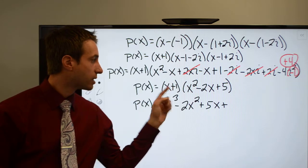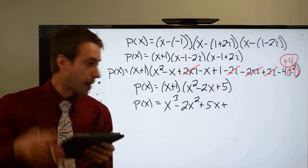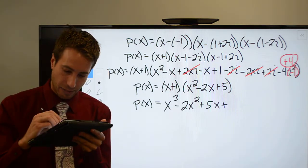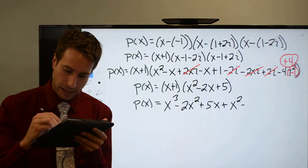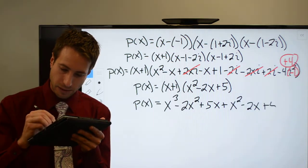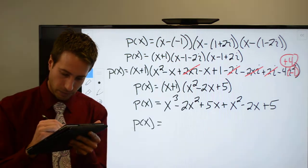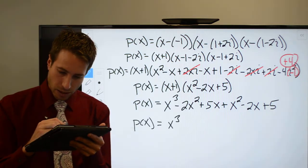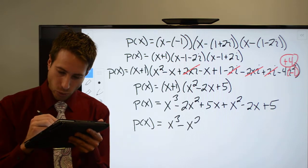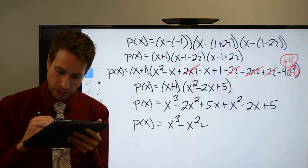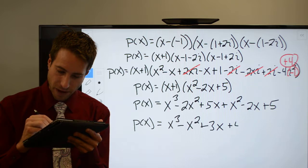Again, 1 times anything is itself. So I'm just going to rewrite this. I'll have plus x squared minus 2x plus 5. Combined like terms, that's going to leave us with x cubed minus x squared plus 3x plus 5.